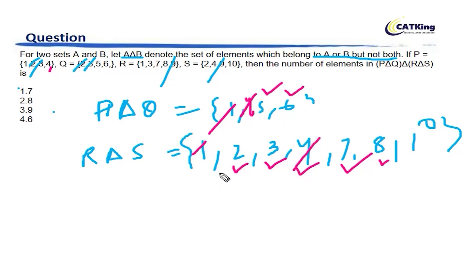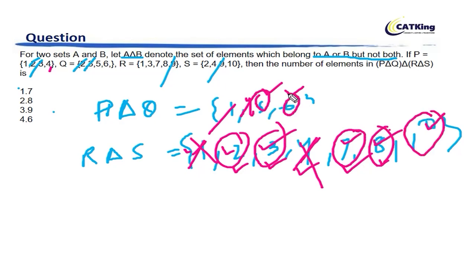5, 6, 1, 2, 3, 7, 8, 10. So 4 will not be there. So 1, 2, 3, 7, 8, 10. Actually 1 is not there, so it will be 2, 3, 7, 8, 10. These are 5 elements here and 2 elements here, so total 7 elements. I hope this is clear to you.